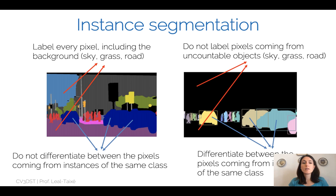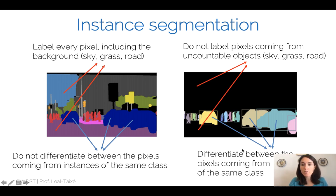The idea is that we want to differentiate the pixels forming one car — one instance — from the pixels forming another instance of another car. Instead of assigning the same label to all pixels forming three cars, we assign different labels: the yellow car is one instance, the blue-green car is a second instance. So not only do we find the semantic class, but we find what kind of instance the object is within that class.